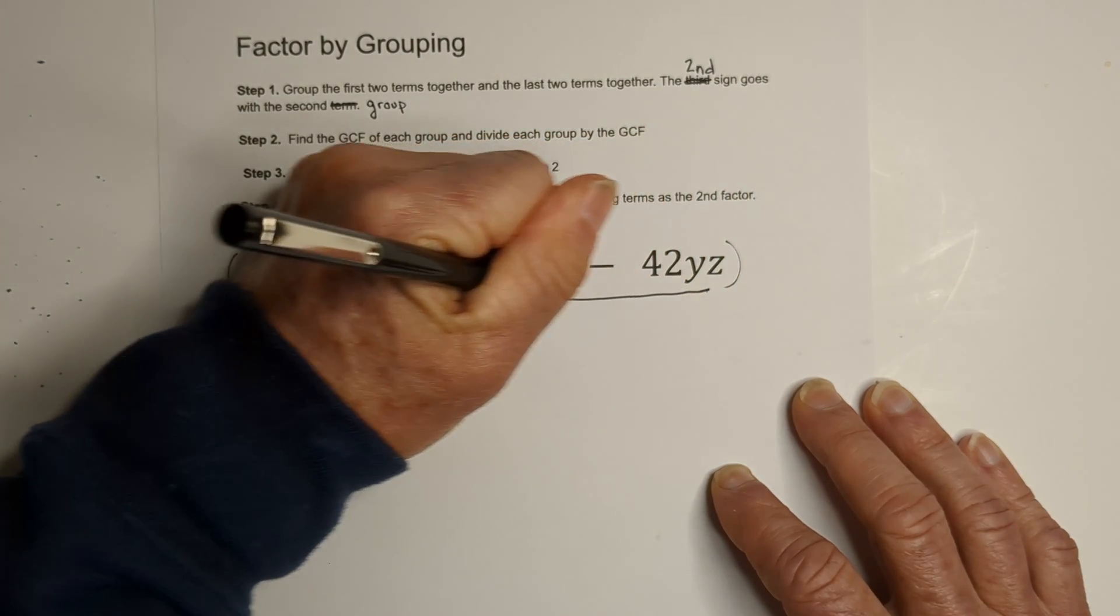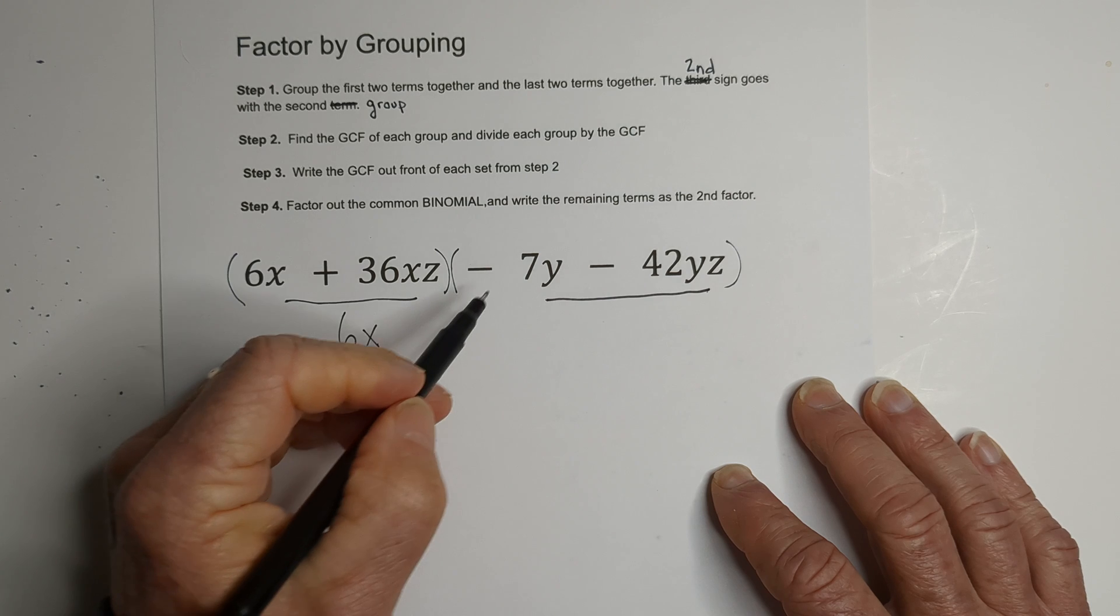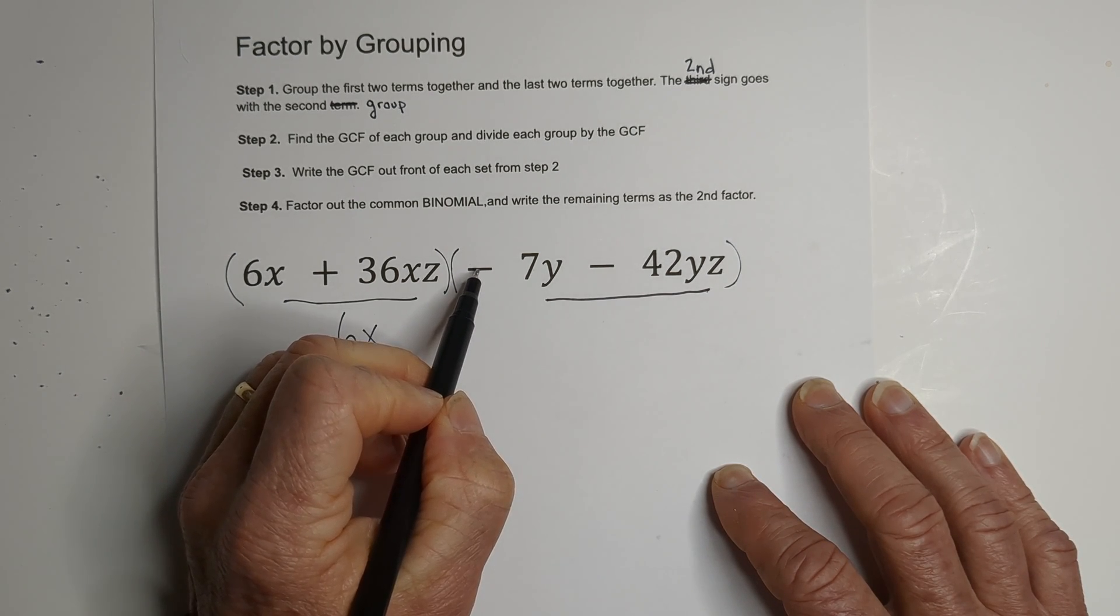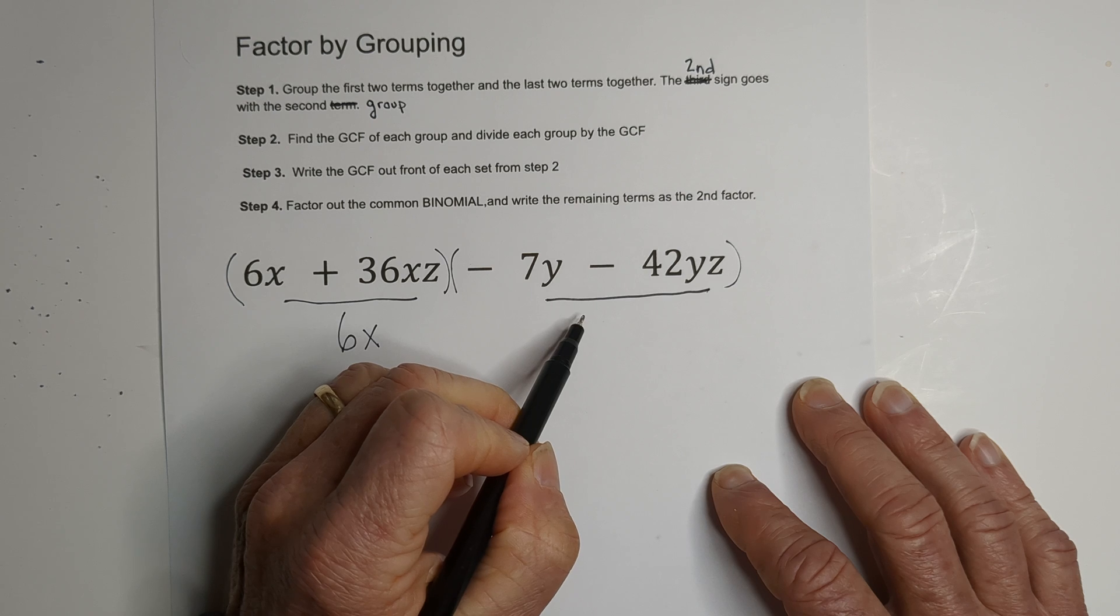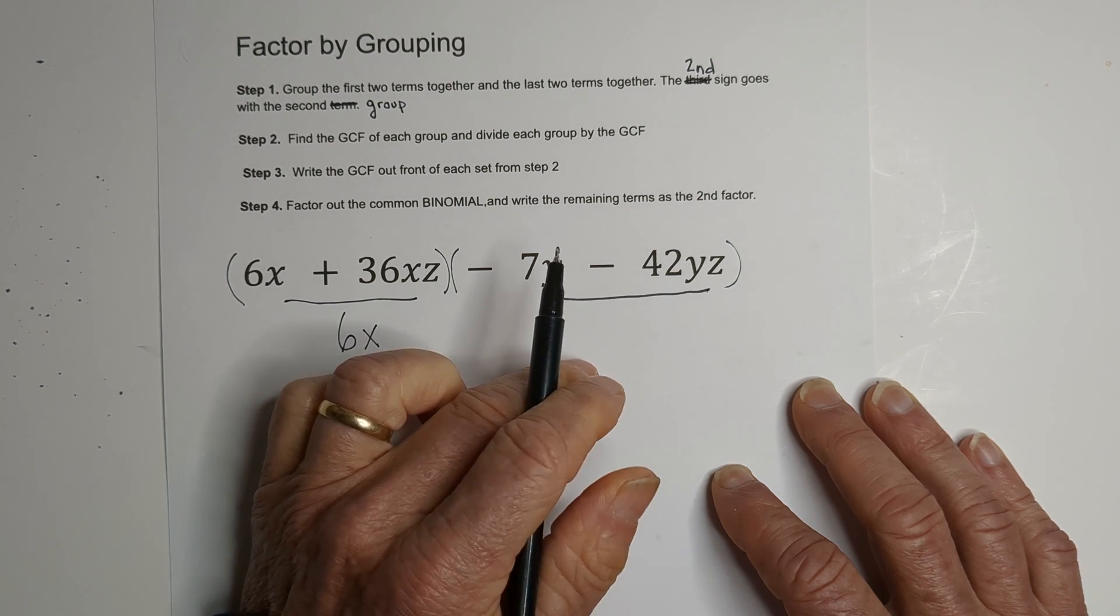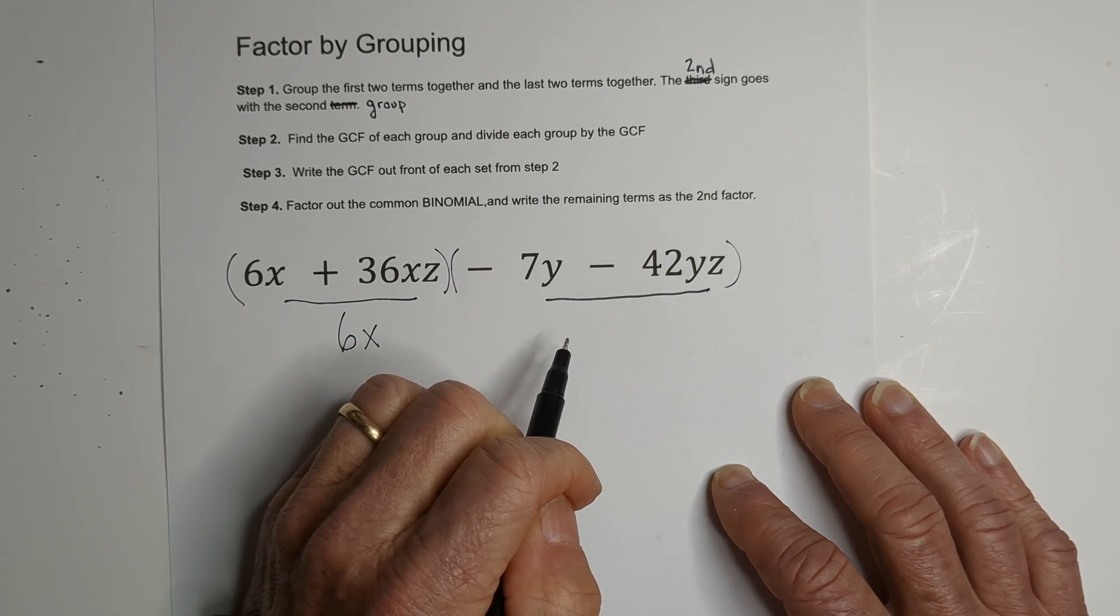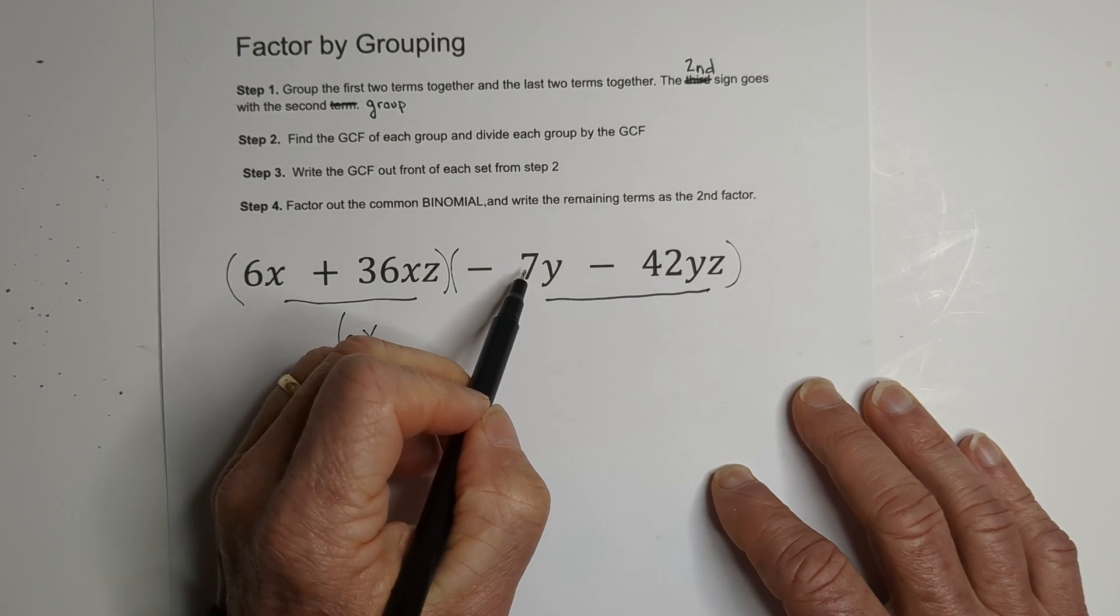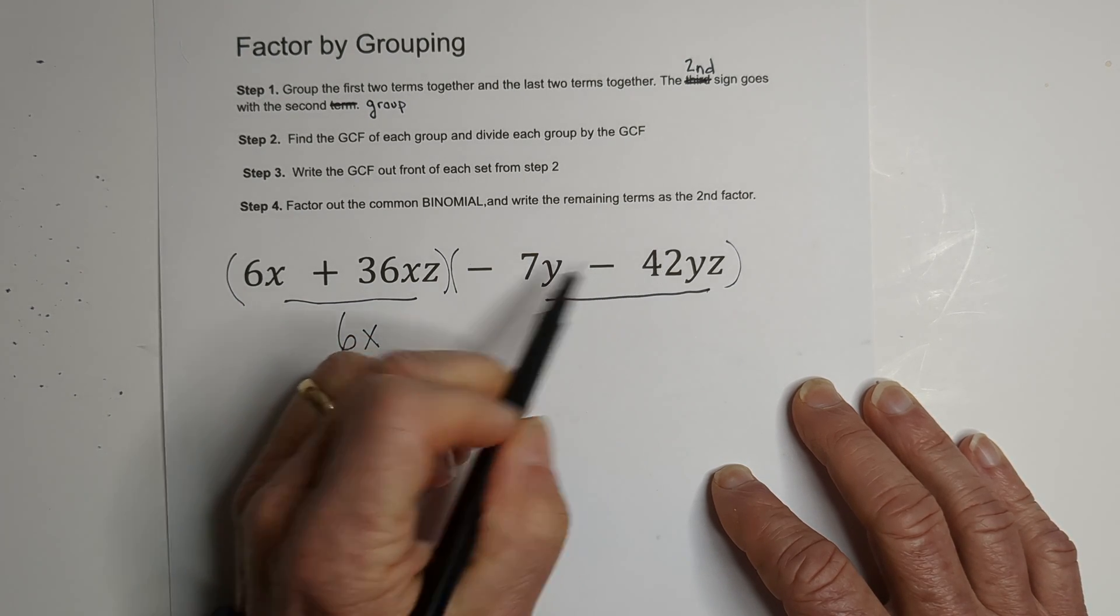And let's go ahead and get the GCF over here. Now a helpful hint, if this term in the second group is negative, your GCF is going to be negative because it factors out the negative, and you'll see how that happens in just a moment. So we have two constants.